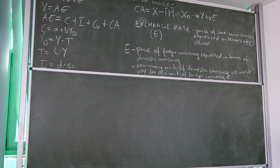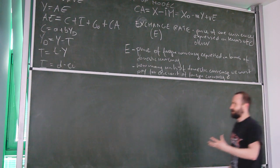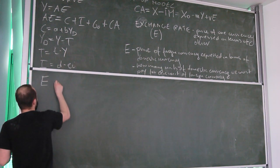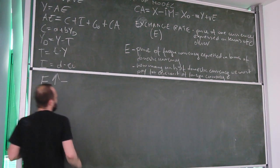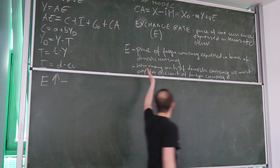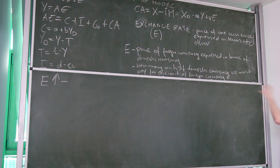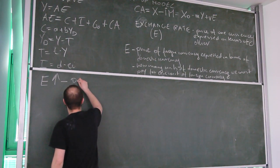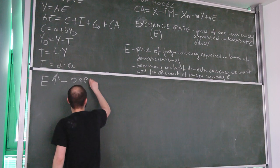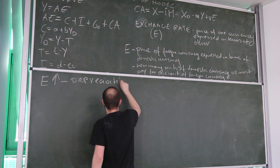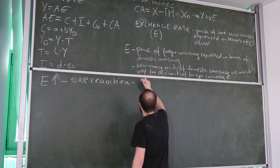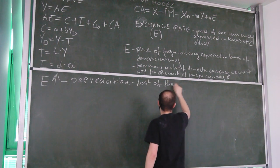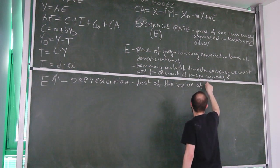With exchange rate defined in this manner, we can define changes in exchange rate. Because this definition is non-traditional: if exchange rate goes up, it means we must pay more units of our currency for one unit of foreign currency. This is called depreciation — a loss of value of the domestic currency.